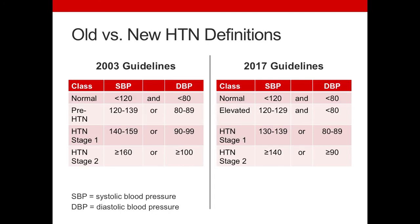Now we'll take a look and compare the old versus the new hypertension definitions. For normal blood pressure that's the same as it was previously — below 120 systolic and below 80 diastolic. We also have a new group of elevated blood pressure that sits between normal and Stage 1 hypertension. The new guidelines eliminated the category of pre-hypertension, so patients are categorized as having elevated blood pressure at 120 to 129 and less than 80.